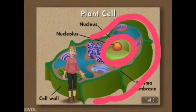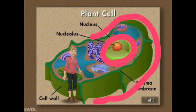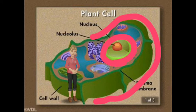Again from Discovery, this is a plant cell. In the center, I've circled in pink the nucleus, just like we had one in the animal cell. But notice the outside of the plant cell — it doesn't move. It's pretty stiff. That's because it's got a cell wall.